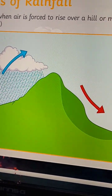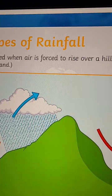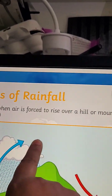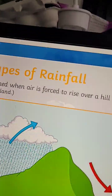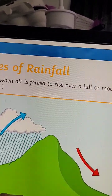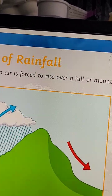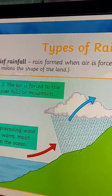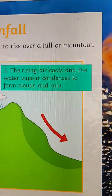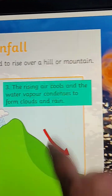The second type of rain is relief rainfall — rain formed when air is forced to rise over a hill or mountain. 'Relief' means the shape of the land. The prevailing wind brings warm, moist air from the ocean, and the air is forced to rise over hills or mountains.